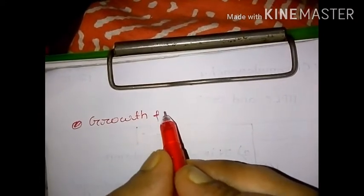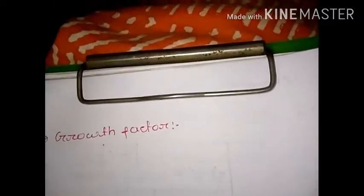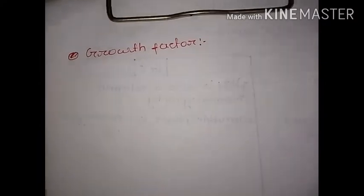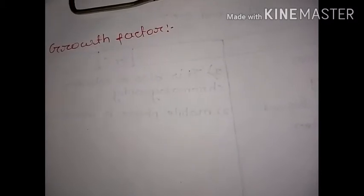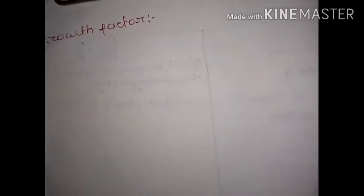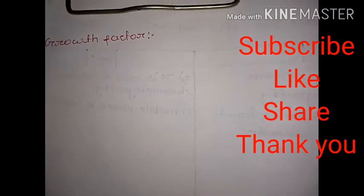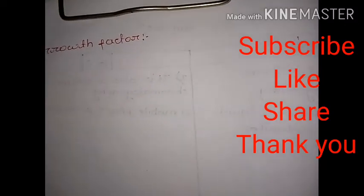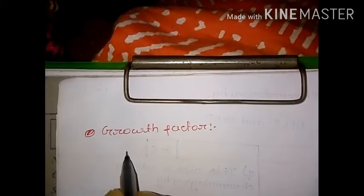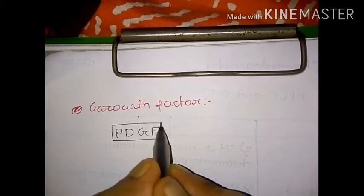Here we take our example that is PDGF, platelet derived growth factor. PDGF is a factor found in blood platelets in mammals, which is released upon tissue damage. PDGF affects fibroblast cells to grow and divide.